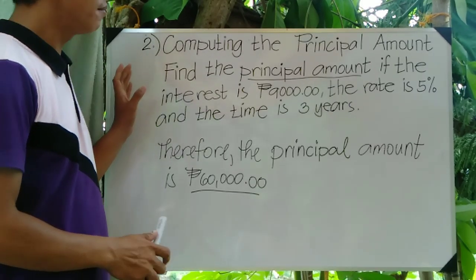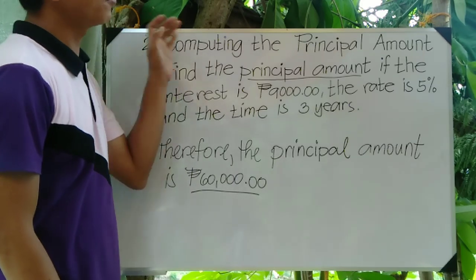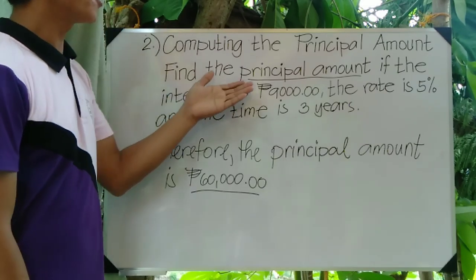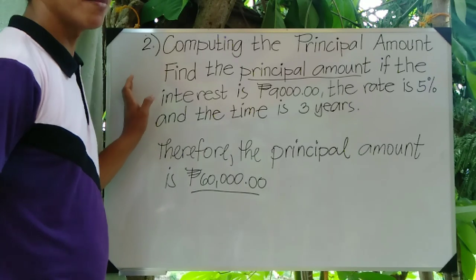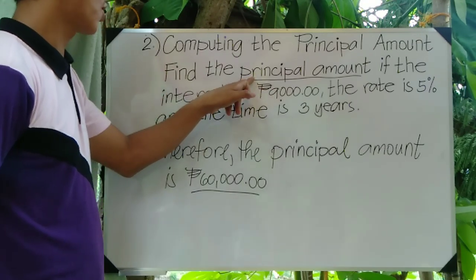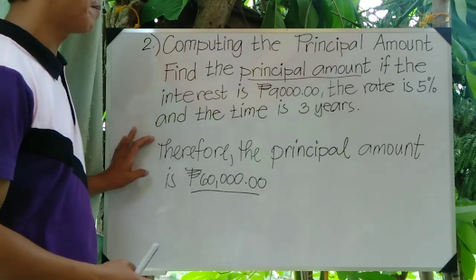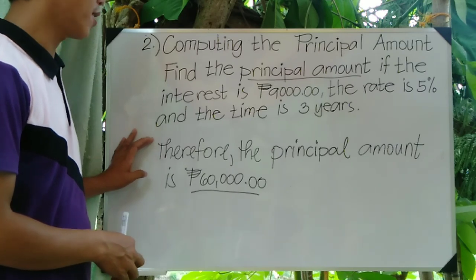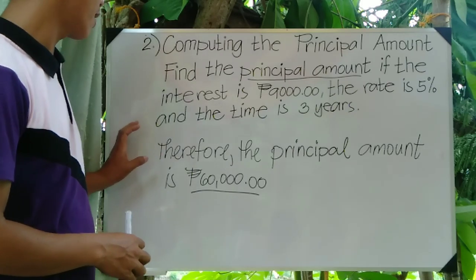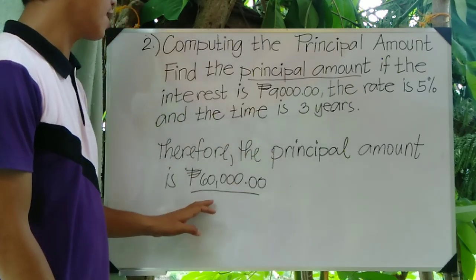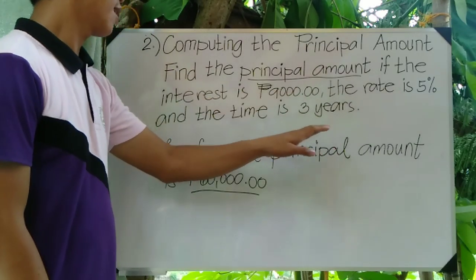Let's go back to problem number two. Our purpose was computing the principal amount. The problem was: find the principal amount if the interest is 9,000 pesos, the rate is 5%, and the time is 3 years. Therefore, the principal amount is 60,000 pesos with an interest of 9,000, a rate of 5%, and a time of 3 years.